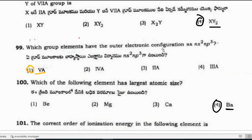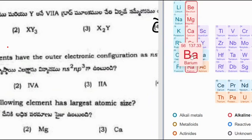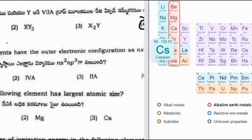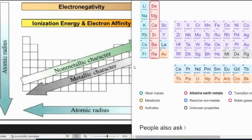Question: Which group elements have the outer electronic configuration NS², NP³? The answer is group 5. Question: Which of the following elements has the largest atomic size among beryllium, magnesium, calcium, and barium? Atomic radius increases from top to bottom, so barium, being at the bottom of the periodic table, has the largest atomic size.